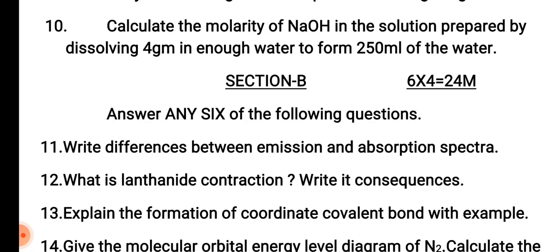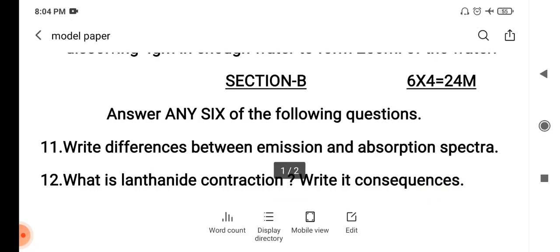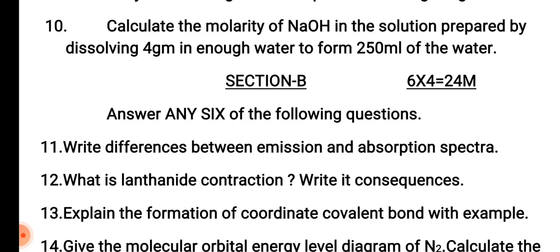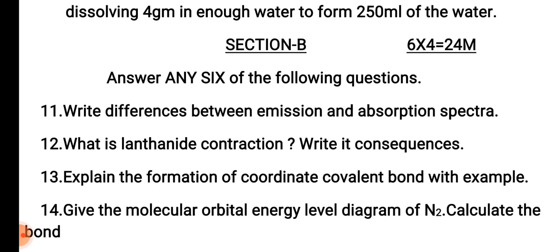Question number 12: What is lanthanide contraction? Write its consequences. The lanthanide contraction definition and its consequences — this is from the classification of elements, that means the periodic table. Question number 13: Explain the formation of a coordinate covalent bond with an example. This is from chemical bonding.